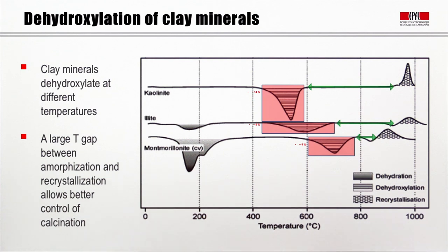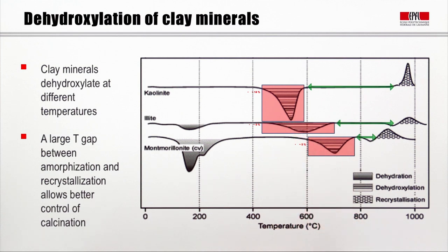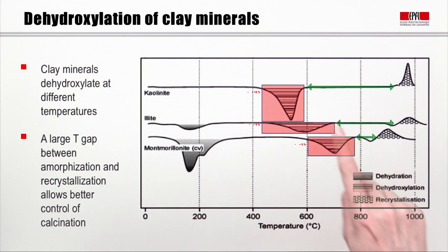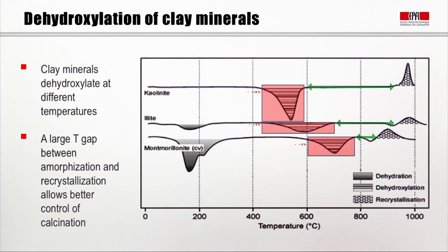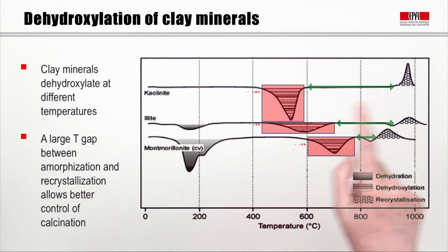Here we see the thermal decomposition curves for the different clay types. All these curves show a stage where heat is taken in — where we have the loss of hydroxyls in the crystalline structure — and then a point where heat is given out where we get recrystallization. We want to be between these two points: we want to have lost the water from the clay, giving an amorphous reactive structure, but we don't want recrystallization because once that occurs the material becomes inert. For kaolinite, there is a very large area in which we can calcine our clays to have reactive materials before recrystallization occurs.